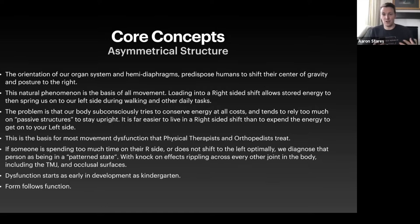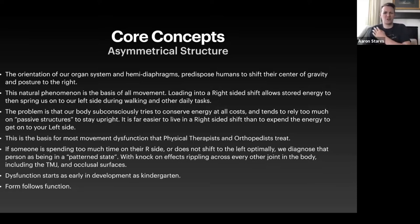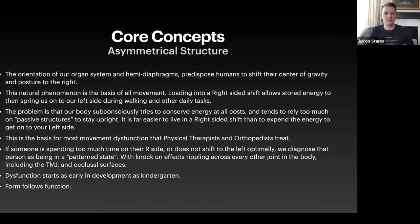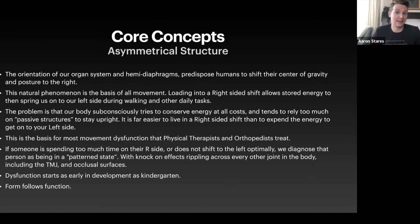We tend to rely on this passive motion to the right side and stay there. If we spend too much time on this side and don't shift onto our left, problems arise and compensations happen. These effects trickle all the way down the chain to our feet and all the way up through the thoracic spine, neck, cranium, and TMJ. Being stuck on your right side is the basis of probably 90 to 95% of all non-traumatic orthopedic things we see in the clinic.